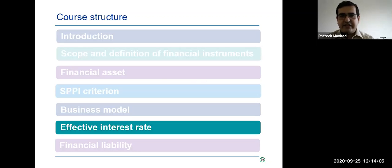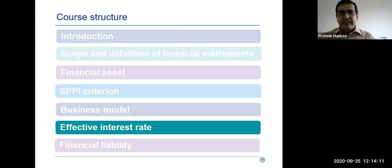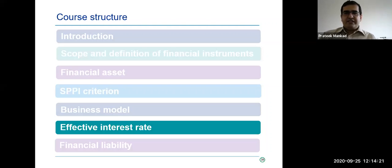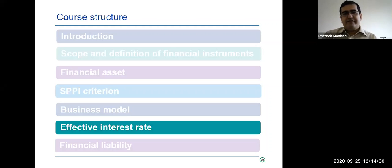This is effective interest rate. And if you're in a bank or an NBFC, or if you're auditing a bank or an NBFC, it can be a nightmarish time for you in the IND AS world. Basically, what IND AS requires is all your interest income and expenses on an amortized cost instrument are to be recognized at the effective interest rate, not the coupon.